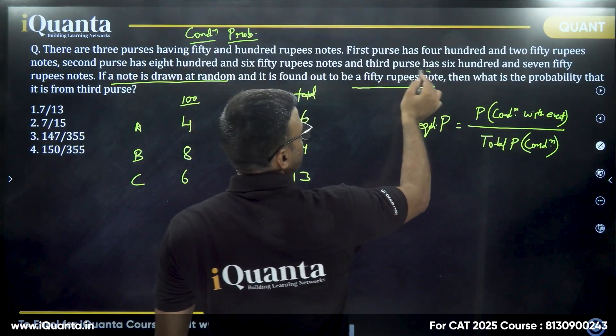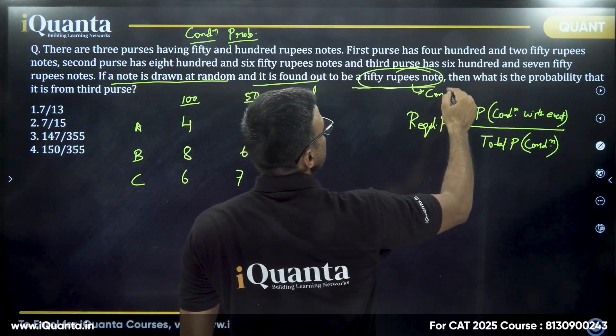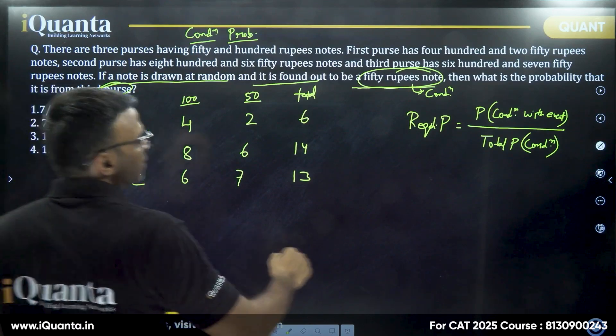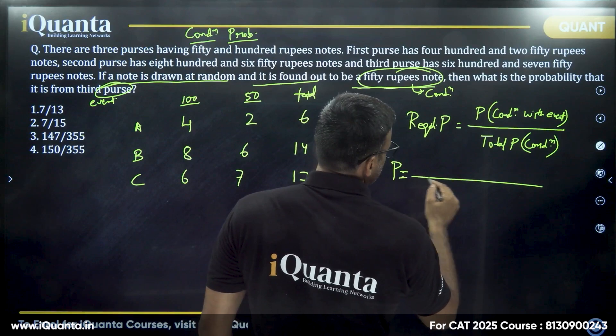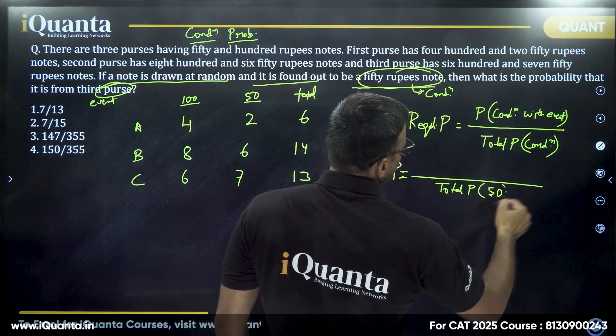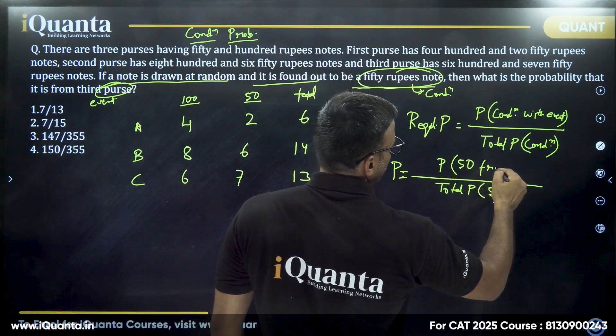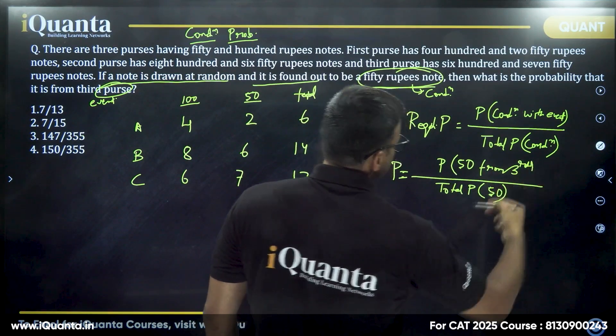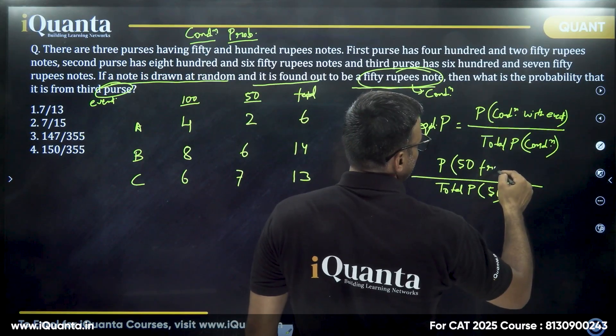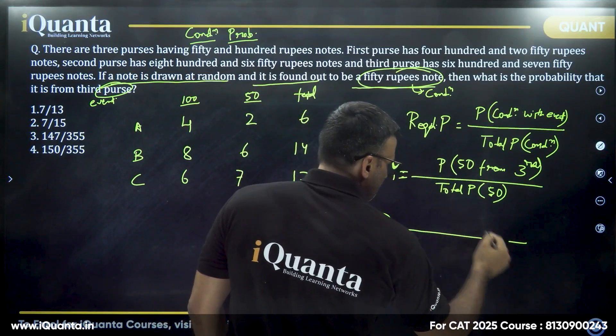So I'll just write, this is the condition—50 rupee appearing in the end is the condition and the purses are the events. So in this question, the required probability will be calculated as total probability of getting a 50 rupee note. And from out of these, one of the particular cases, probability of 50 from third, the third purse is C. From the third purse will come in numerator. That's exactly what you're supposed to do. I'll write it further to make it more clear.